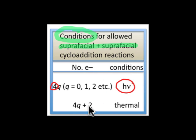The 4q plus 2 reactions, which would be 6 electrons, 10 electrons, or 14 electrons, are thermally allowed suprafacial plus suprafacial cycloaddition reactions.